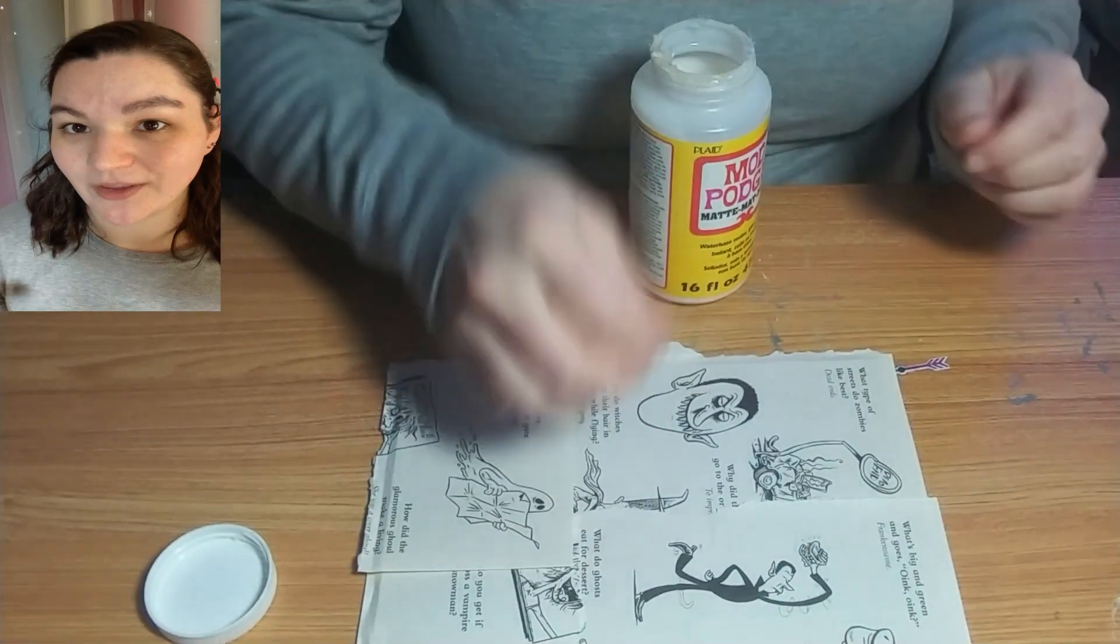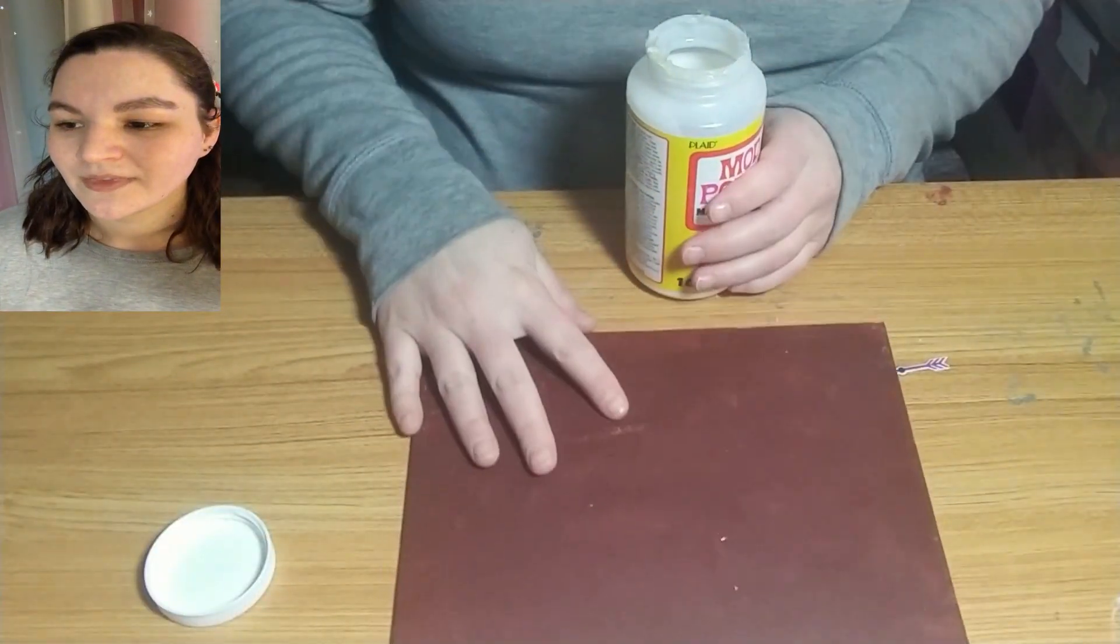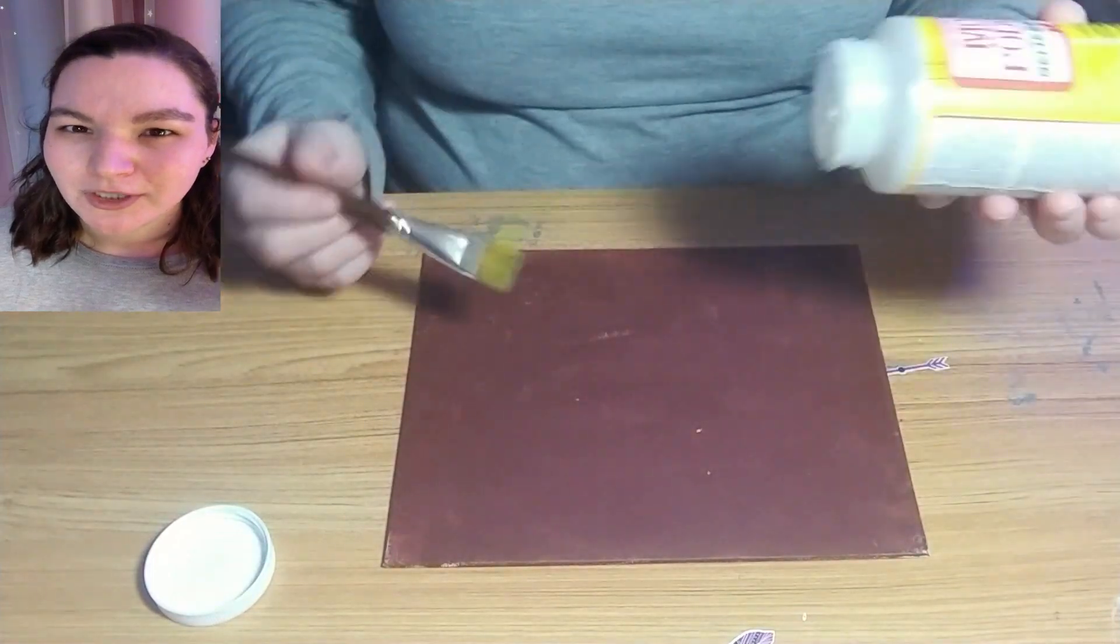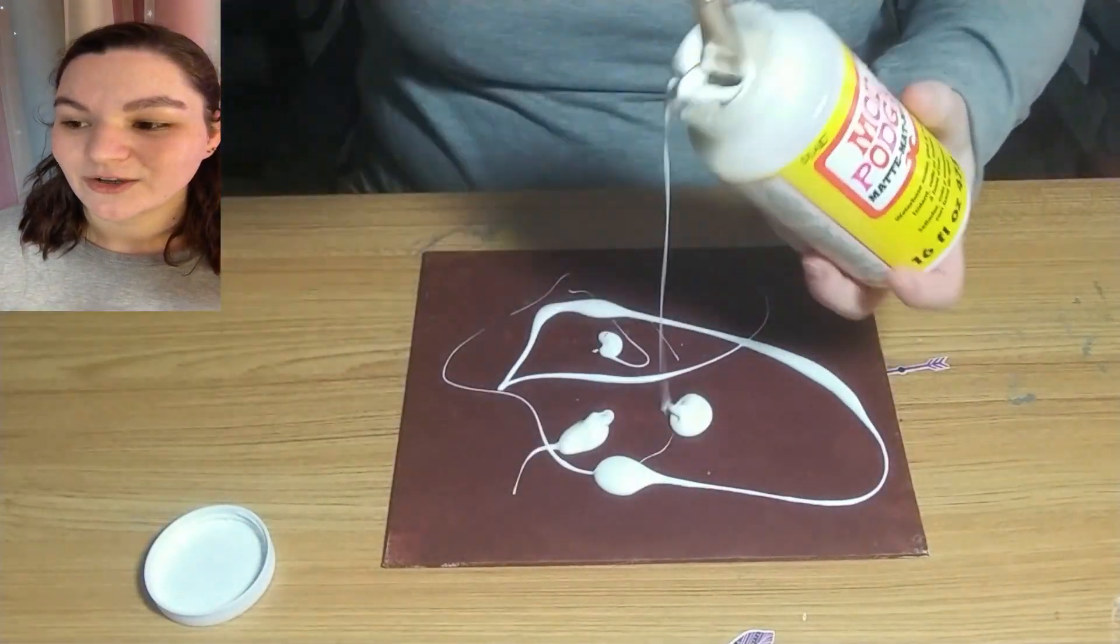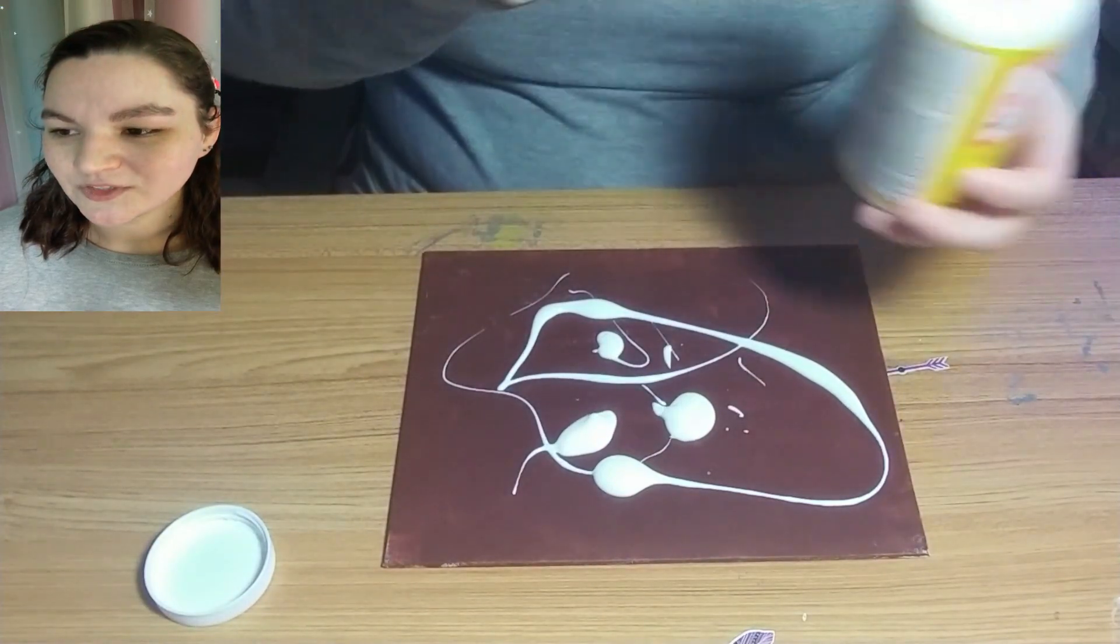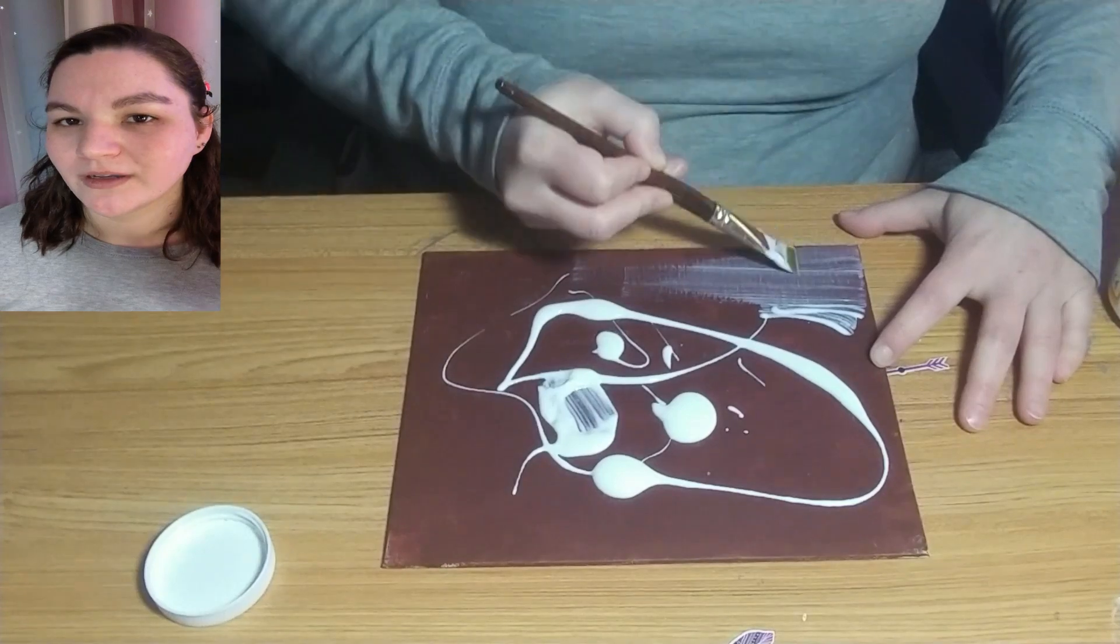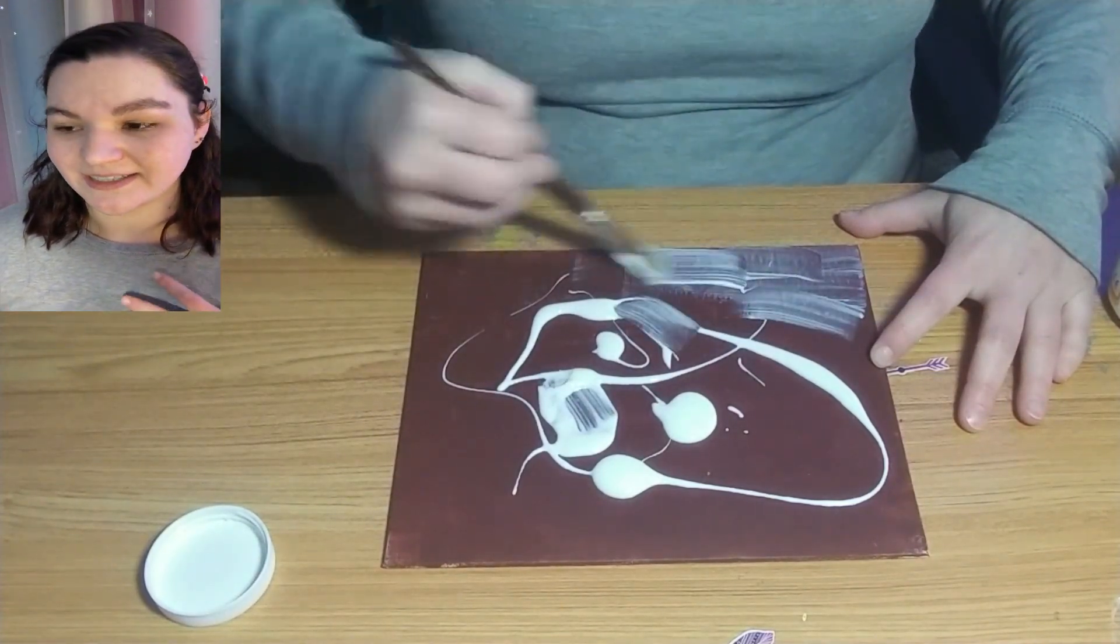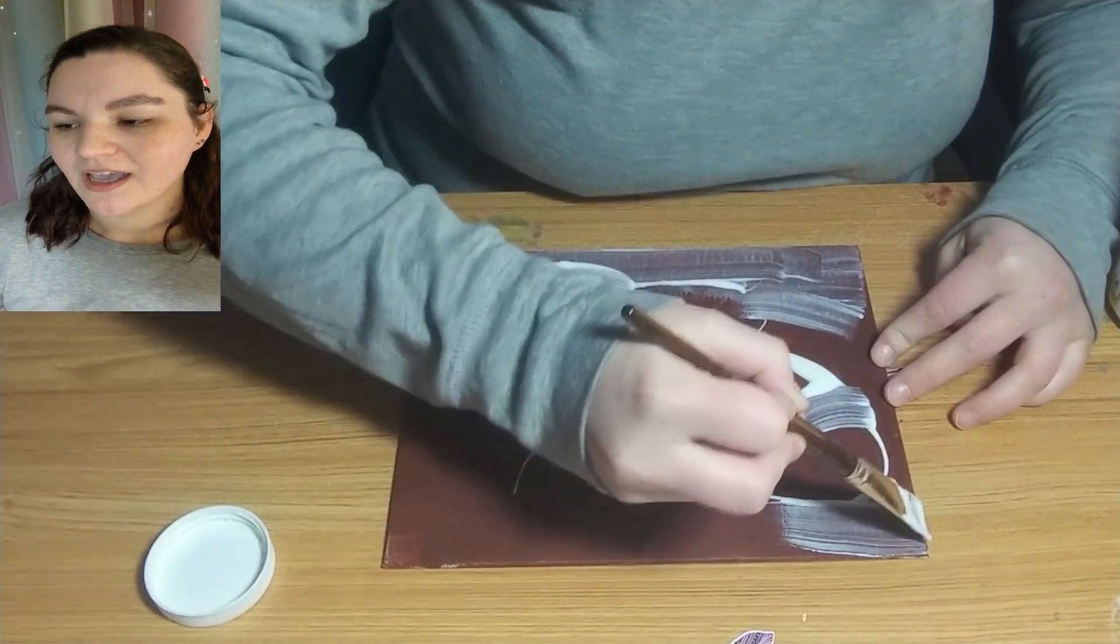You mod podge first - I put them down before any mod podge to decide where I want them, then take them all off and put the mod podge down. You don't want too much mod podge or else it's going to take forever to dry. I put way too much and had to take quite a bit off. I just do it on the bottom - I won't mod podge back over the top until it's done, this is just to hold the pages onto the canvas.